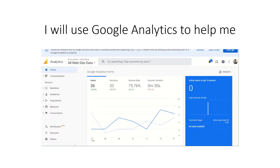The bounce rate is going down, which is a good thing. A bounce rate basically means someone clicks on your page and then clicks off — they don't navigate through your store or look at other products, they just click on and click off. Session duration is how long their sessions are — currently 30 seconds, and that's decreasing, but I want it to increase.